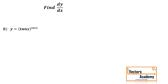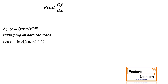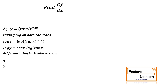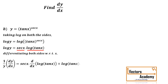Let us have one more example of this type: y is equal to tan x raised to sec x. The first step is to take log on both sides — log y is equal to log of tan x raised to sec x. Since sec x is in the power, it comes into multiplication, giving log y is equal to sec x into log of tan x. Now differentiating both sides, the left hand side is always 1 by y dy by dx, while on the right hand side we apply the uv rule: sec x into derivative of log tan x plus log tan x into derivative of sec x.